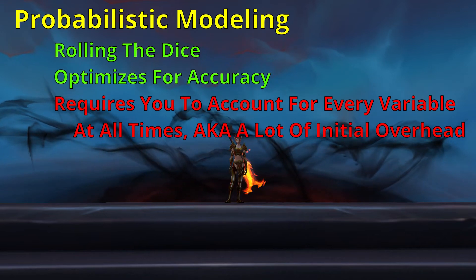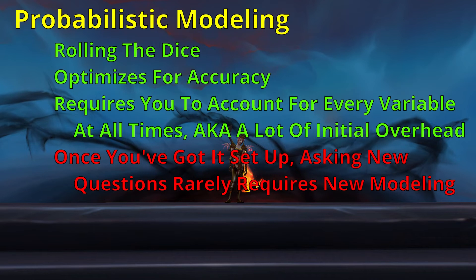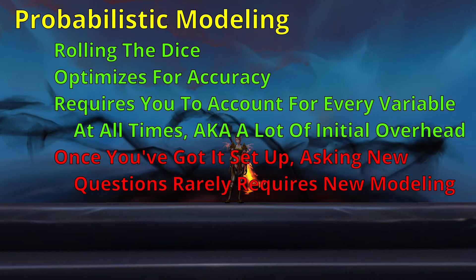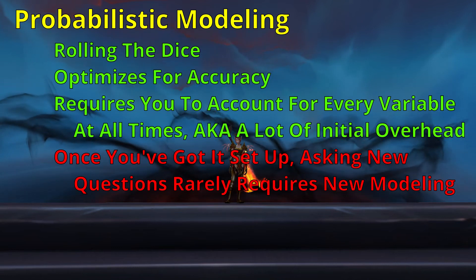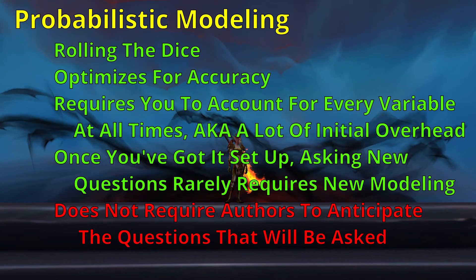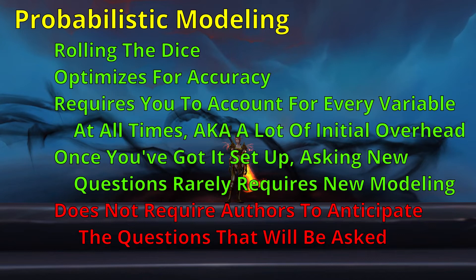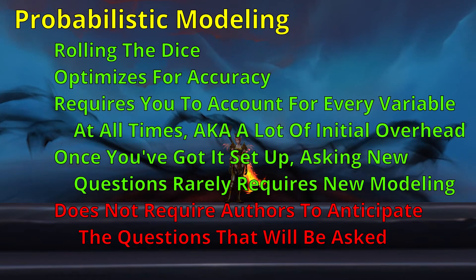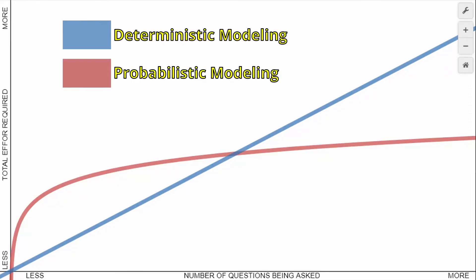Because probabilistic modeling optimizes for accuracy, creating a reasonably useful model requires a tremendous amount of overhead. But once you have created that model, asking new questions rarely requires a modification of the tool. And in those rare circumstances where modification is necessary, it's typically only a modification of the data that it outputs rather than the way the model generates that data. This makes each additional question you ask decrease the total amount of effort per question asked. In order to achieve accuracy, these tools attempt to account for every possibility, which allows them to be flexible — the authors do not need to know the questions going to be asked, which is especially valuable for tools shared with the general public. To use a mathy summarization, as you increase the number of questions you want to ask your model, the total amount of effort required scales roughly linearly for deterministic modeling, whereas probabilistic modeling scales logarithmically.